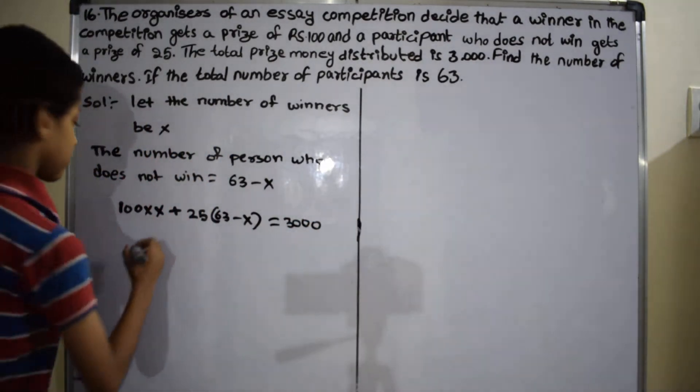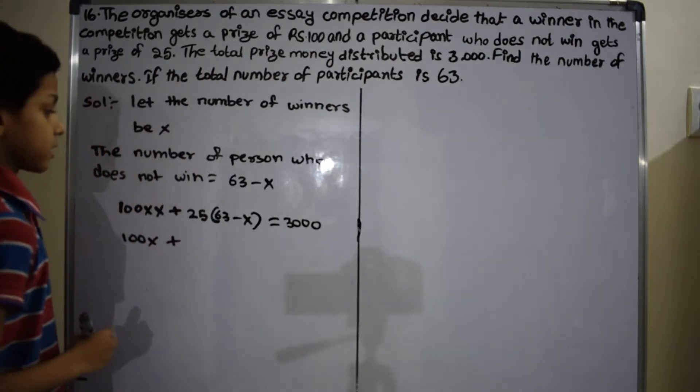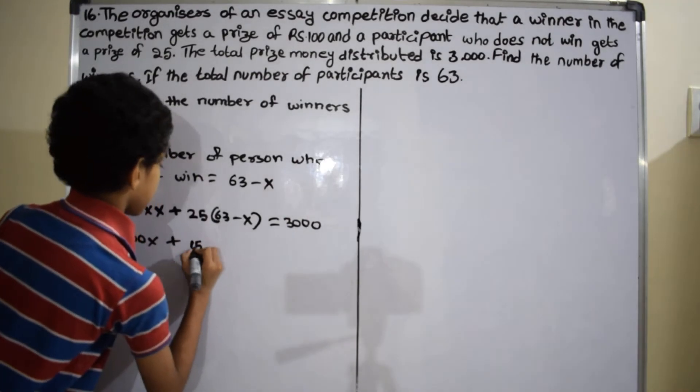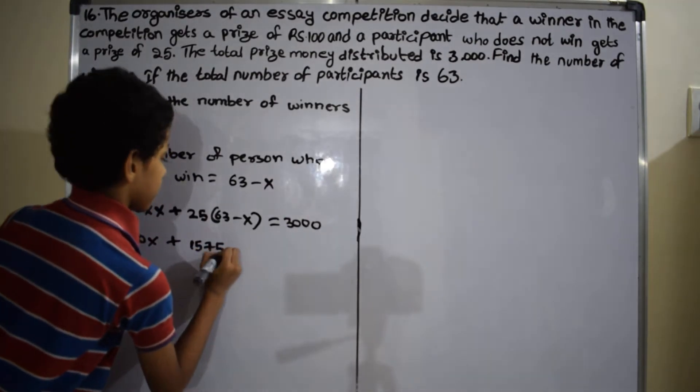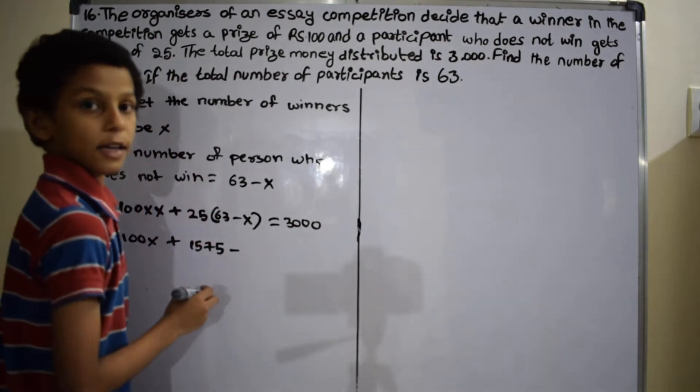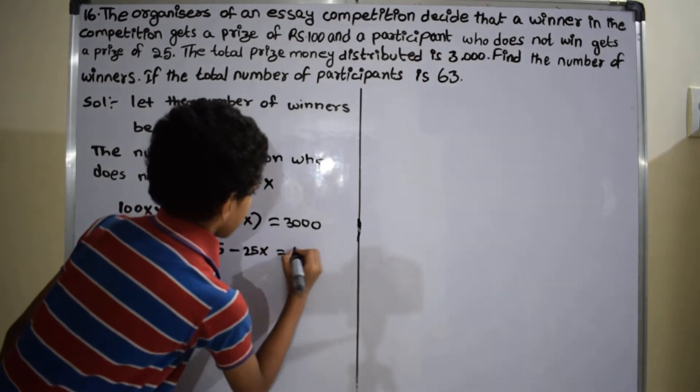100 times x equals 100x. Plus 25 times 63 equals 1,575 minus 25 times x, which is 25x, equals 3,000.